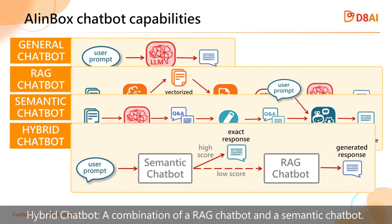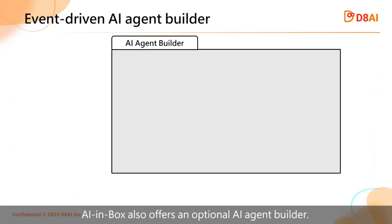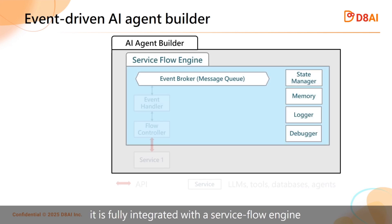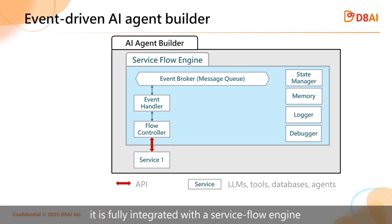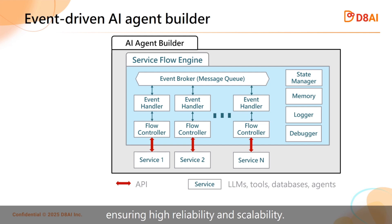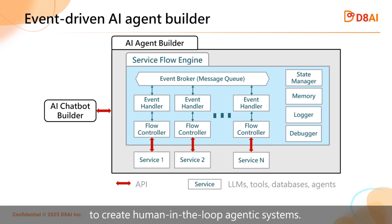The fourth type is a hybrid chatbot, combining a RAG chatbot and a semantic chatbot. AI Inbox also offers an optional AI agent builder which, unlike other solutions on the market, is fully integrated with a service flow engine based on an event-driven architecture, ensuring high reliability and scalability. The AI agent builder can be combined with the chatbot builder to create human-in-the-loop agentic systems.